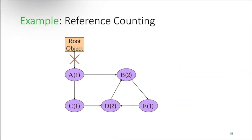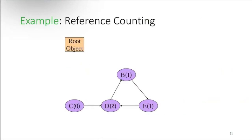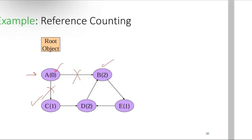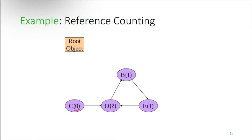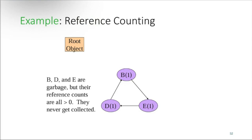In a diagram with root objects pointing to each other, the numbers in brackets are reference counts. Object A0 is not pointed to by any other object, so its reference count becomes zero and it is removed as garbage. As soon as A0 is removed, the objects it referenced also lose their references and are removed. However, objects B, D, and E may be garbage but their reference counts are all greater than zero and they never get collected — this is a key problem with reference counting garbage collection.